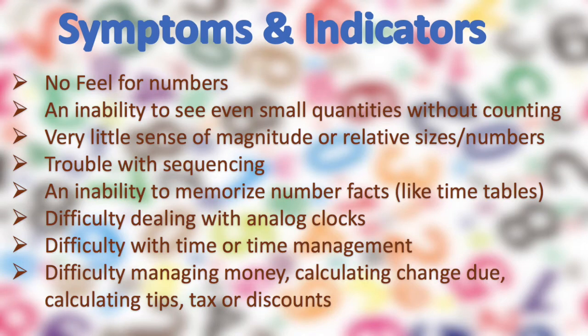Here are some other indicators. Having no feel for numbers — a difficulty visualizing numbers based on their value instead of mere words, characters, or symbols. They also tend to have trouble with sequencing, where the person has no intuitive sense of the sequence of counting numbers.